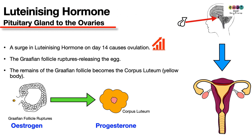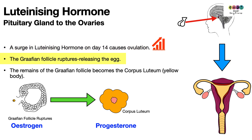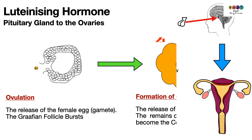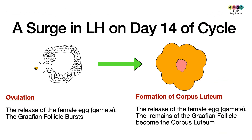Luteinizing Hormone is secreted by the pituitary gland and travels in the blood to the ovaries. A surge — a sudden rise — in Luteinizing Hormone on day 14 causes ovulation: the Graafian follicle ruptures or bursts to release the egg. What remains of the Graafian follicle then becomes a structure known as the corpus luteum.